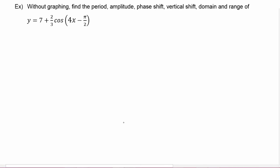In this example, we are being asked to do it without graphing the function. So we'll find the period, amplitude, phase shift, vertical shift, domain, and range of y equals 7 plus 2/3 cosine of quantity 4x minus π over 2.